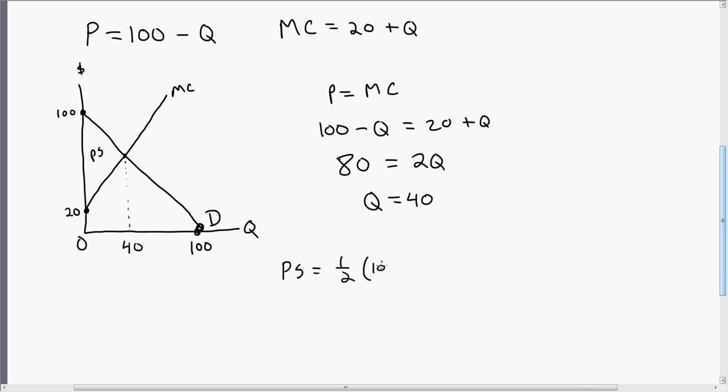1.5 times 100 minus 20. And then that's going to just be times 40. And this equals $1,600 of producer surplus.